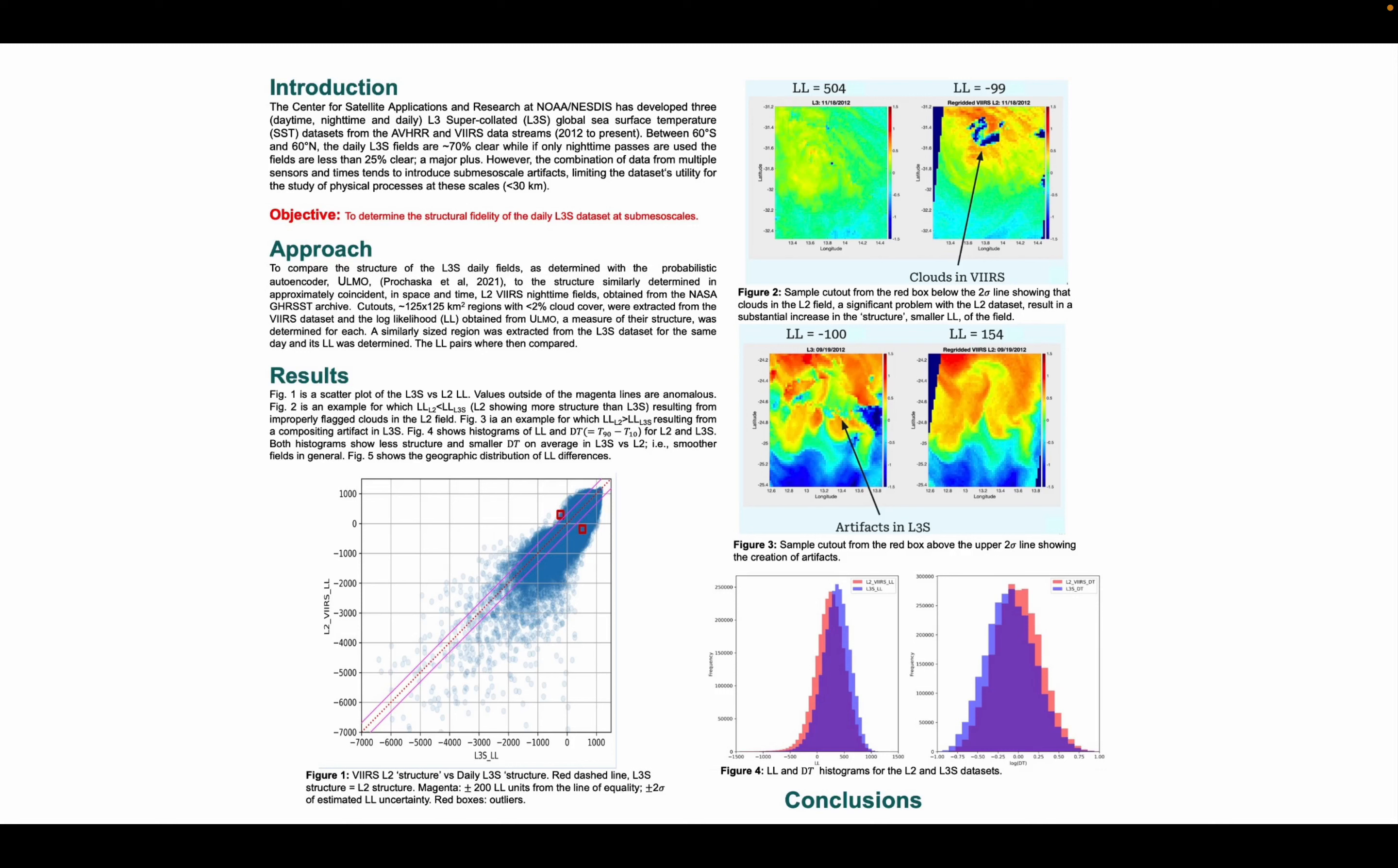In Figure 3, we see histograms for the comparison of log-likelihood values and difference in temperature between the 90th and 10th percentile of temperature within these cutouts. In both of these plots, we see the VIRS fields have slightly lower log-likelihoods and slightly higher difference in temperature on average.